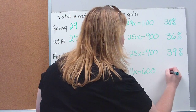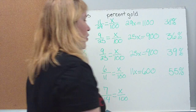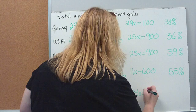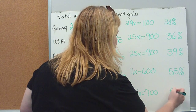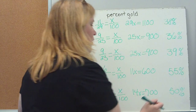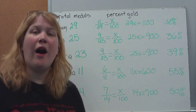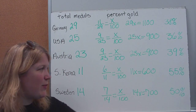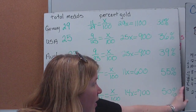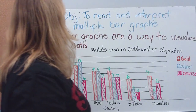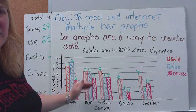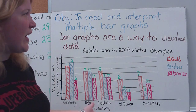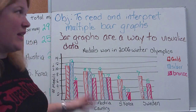For South Korea: 11X equals 600, giving 55% — so 55% of their medals were gold. For Sweden: 14X equals 700, giving 50% of their medals as gold. So that's one thing you can use a graph for. You just need to be able to look at it, understand how you're reading it, know how your numbers line up and what each thing means, and as long as it's clearly labeled, it should be fairly obvious to interpret.